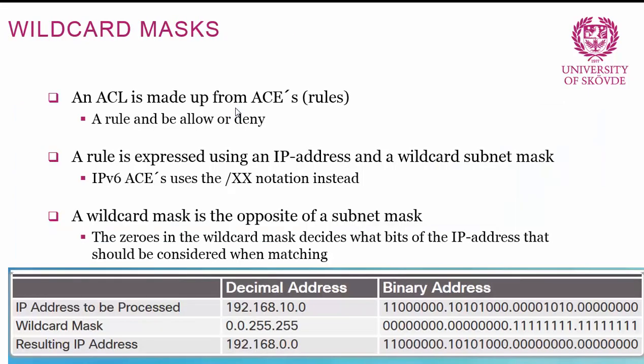An access control list is made up of access control entries or rules, and any rule can either be allow or deny. One single rule is expressed using an IP address and a wildcard subnet mask for IPv4, whereas for IPv6 rules are expressed using the IPv6 address and slash prefix length notation instead.